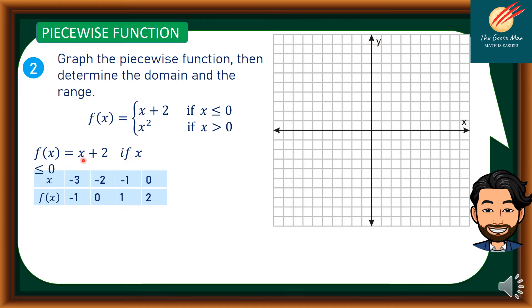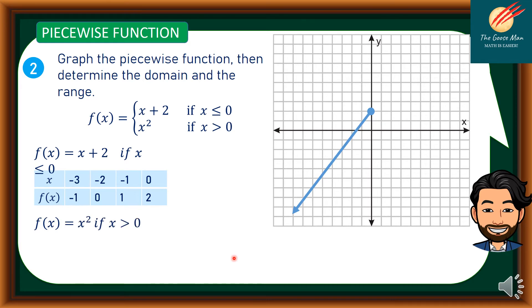Continuing: if x = -2, f(x) = 0; if x = -3, f(x) = -1. Graphing these points, the line moves from this point downward into the third quadrant.